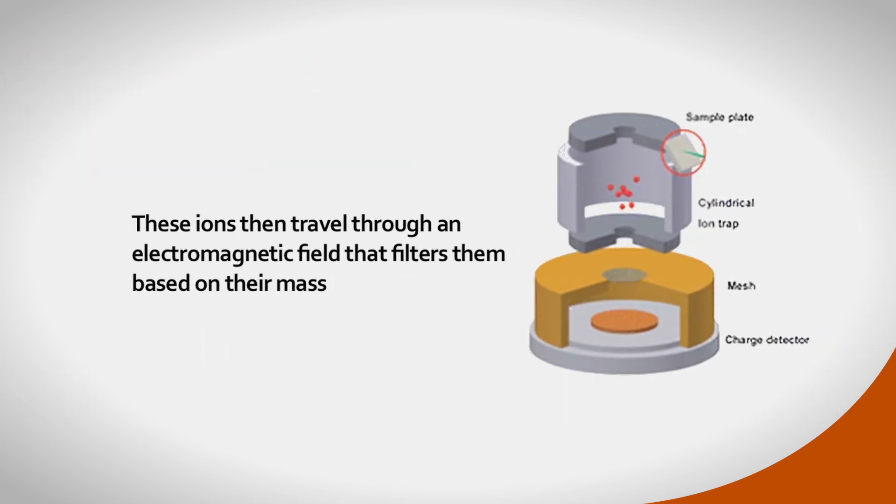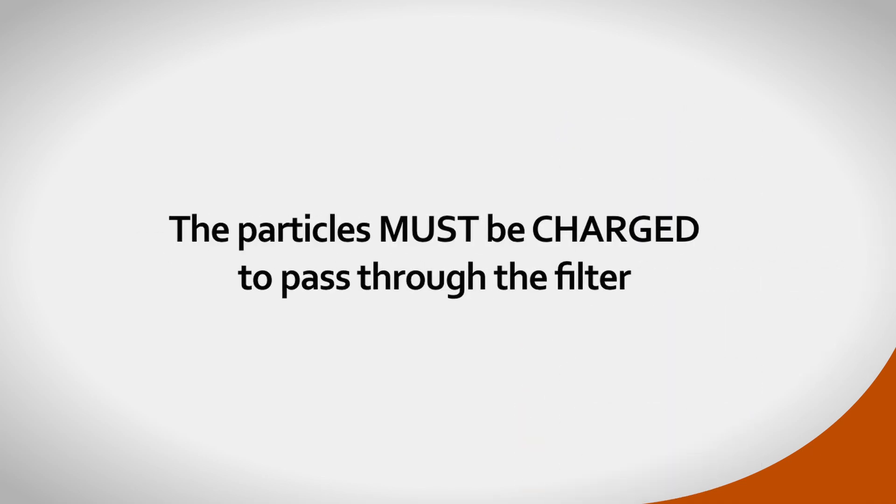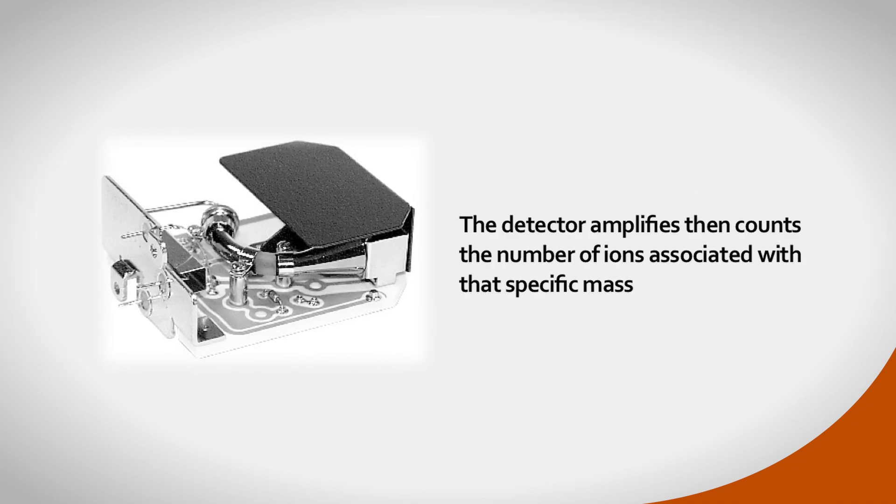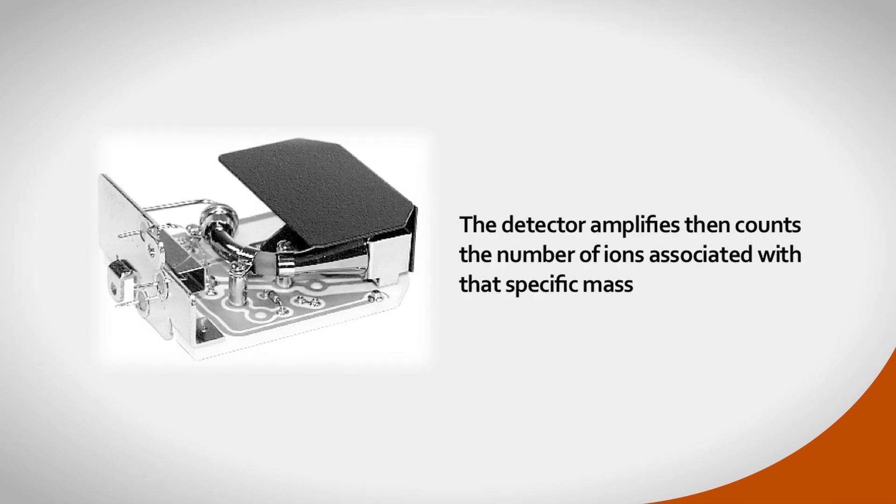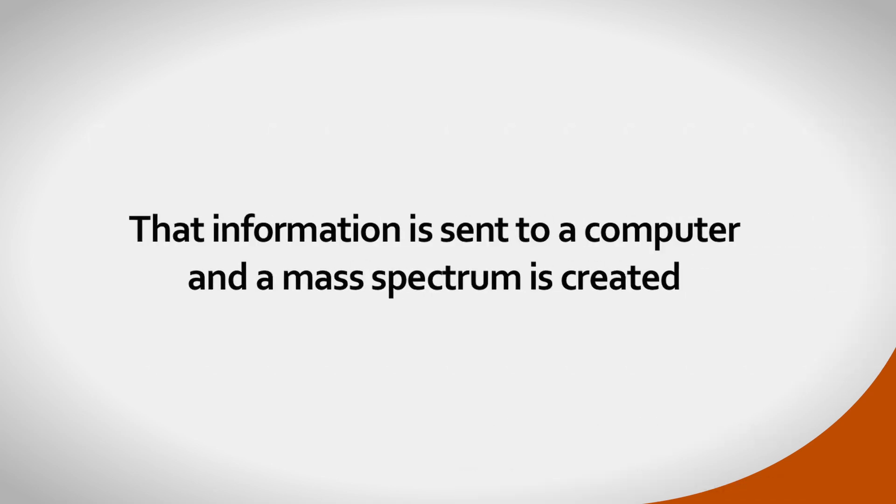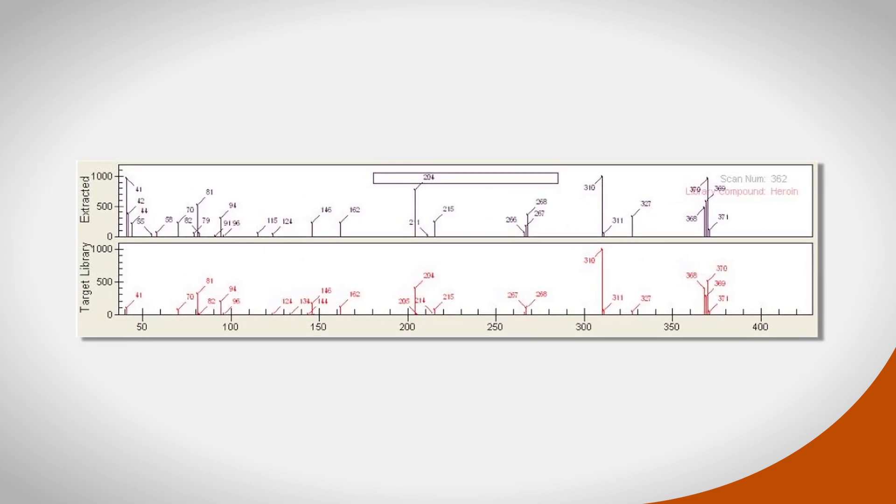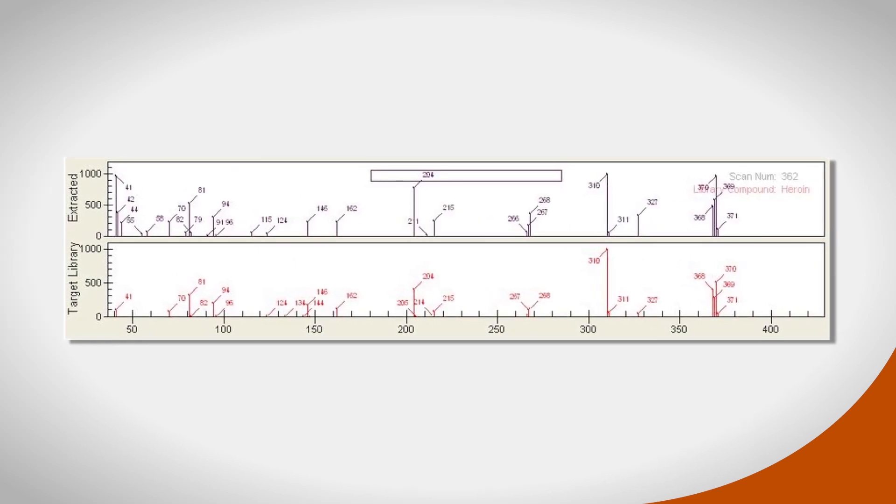These ions travel through an electromagnetic field that filters them based on their mass. The particles must be charged to pass through the filter. The instrument's detector amplifies and then counts the number of ions associated with that specific mass. That information is then sent to a computer and a mass spectrum is created, showing the number of ions with different masses that travel through the filter.